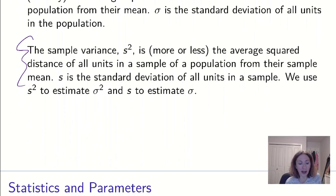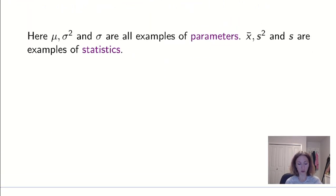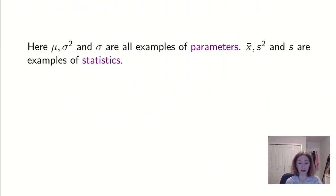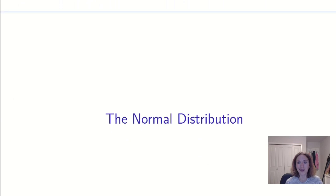So we use our s² to estimate σ², and we also have that our s is going to estimate σ. Our μ, σ², and σ are all examples of parameters. Our x̄, s², and s are all going to be examples of statistics. And with that, in our next video we're going to move into the normal distribution and see how important it is that we have parameters to be describing our distributions.